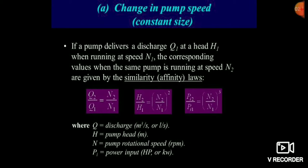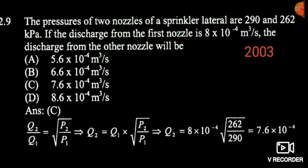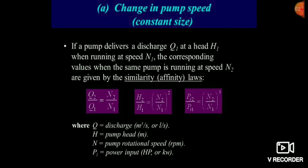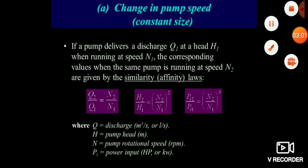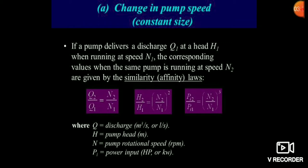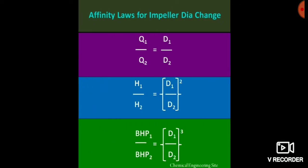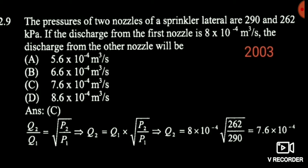Q2 by Q1 equals a pressure relationship. H2 by H1 is equal to N2 by N1 squared. And since N2 by N1 is directly proportional to Q2 by Q1, we can conclude that H2 by H1 is proportional to the square of Q2 by Q1. Here the speed is not given, but the discharge is given, and we know that speed is directly proportional to discharge.